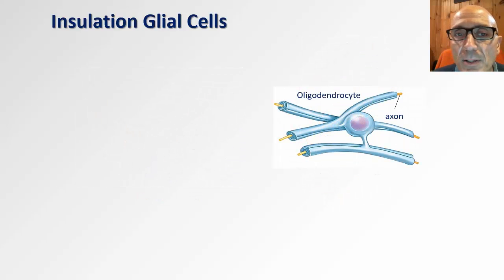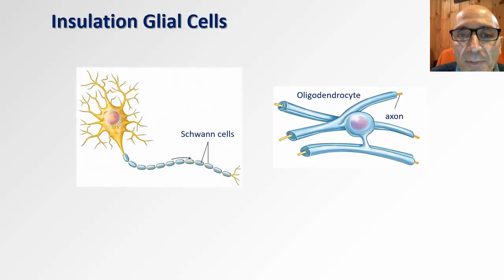Oligodendrocytes are the counterparts of Schwann cells in the central nervous system. They provide electric insulation of axons in the central nervous system. Electric insulation provided by both types of cells is the result of the lipid material known as myelin. Myelin is found in the membrane wrappings around axons. And this concludes our first video on the nervous system.